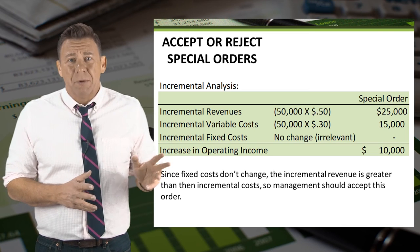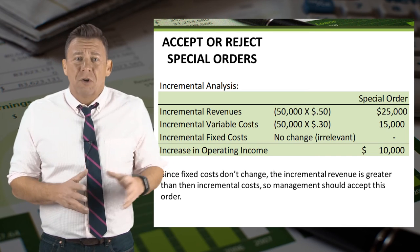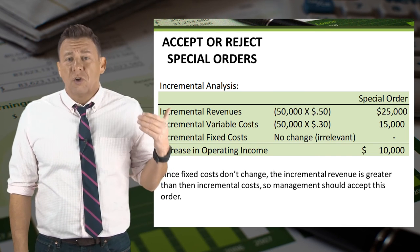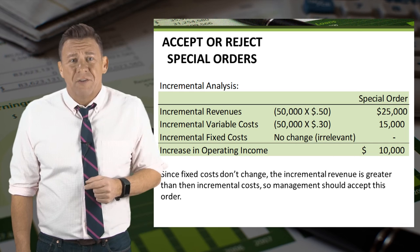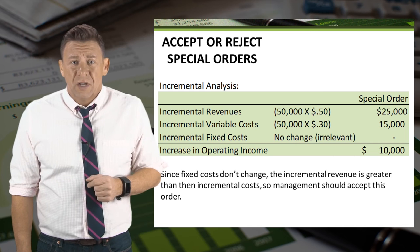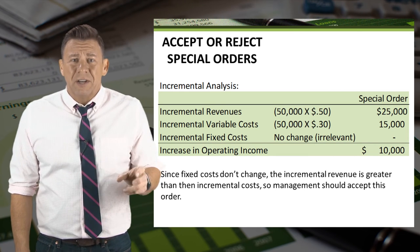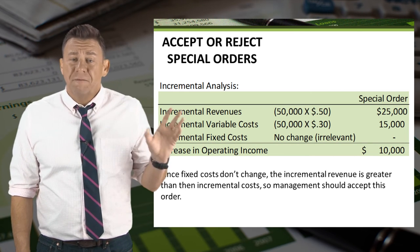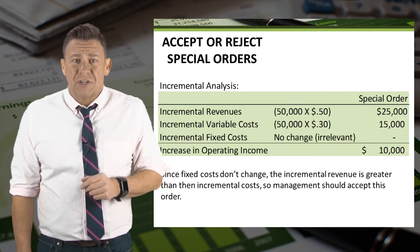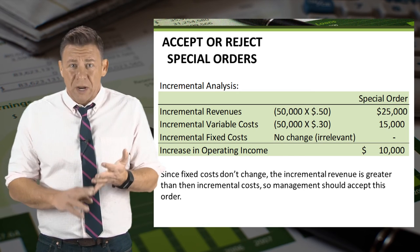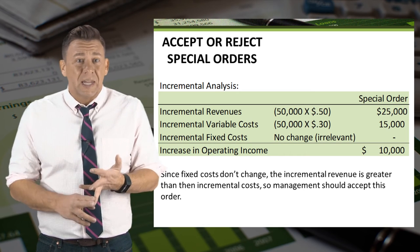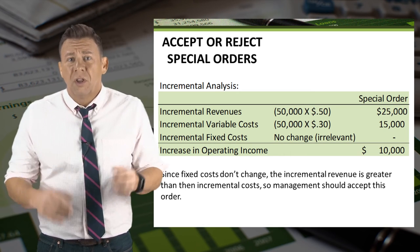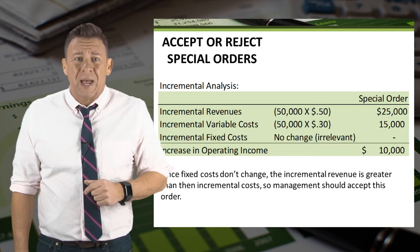I've created a table for the incremental analysis. Incremental revenues total $25,000. Incremental variable costs total $15,000, because the direct material, direct labor, and variable overhead total $0.30 per pack.